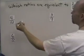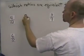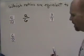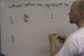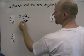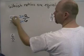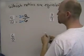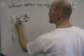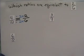Let's begin by comparing four-twelfths. Is two-sixths the same thing as four-twelfths? You can see that two times two is equal to four, and six times two is equal to twelve. That tells us that these two ratios are equivalent to each other.